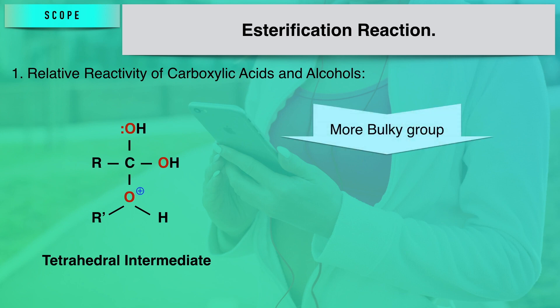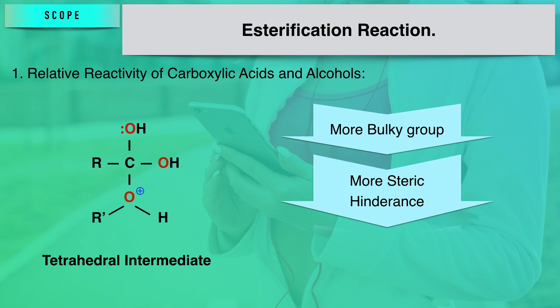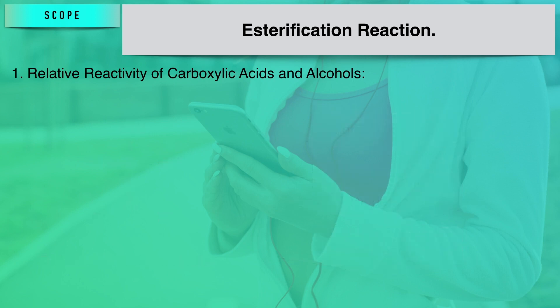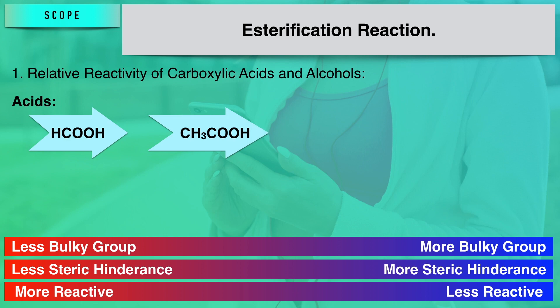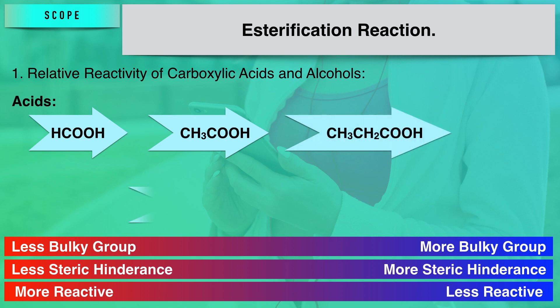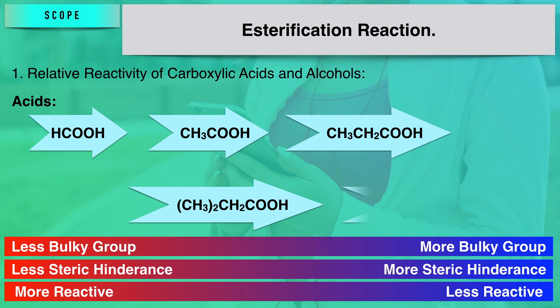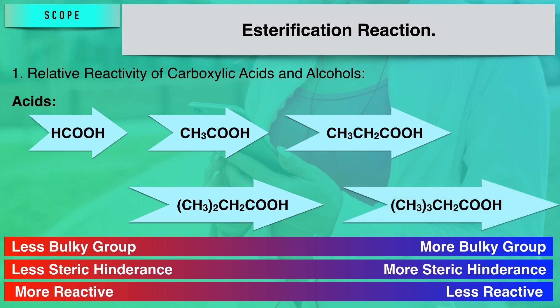As the number and size of the substituents around the carboxylic group or the hydroxyl group of the alcohol increases, the rate of esterification slows down. On this basis, the order of reactivity for carboxylic acids — least steric hindrance — starts with formic acid, which has the highest rate of reactivity, followed by acetic acid. As you move to higher members with more alkyl groups, including tertiary groups attached to the acetic acid group, steric hindrance increases and the rate of esterification goes down.